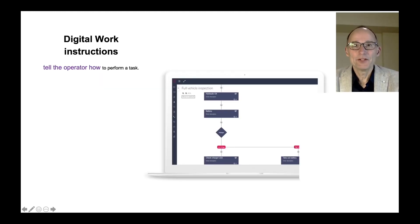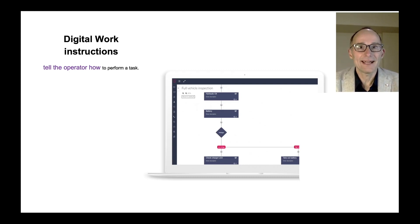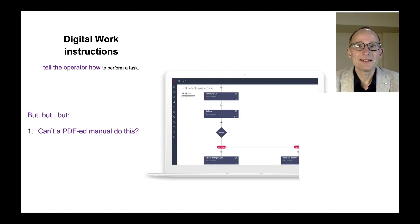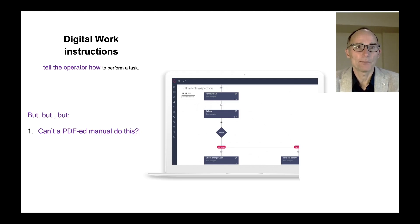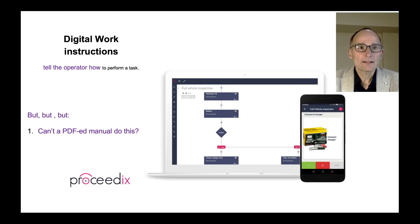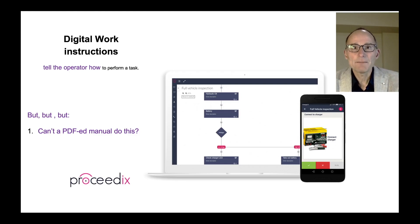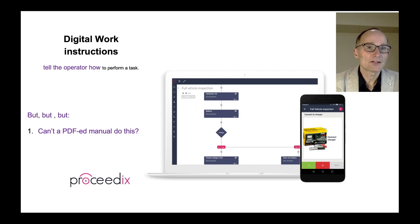The first step of digital operations is to digitize the work instructions which tell the operator how to perform a task. Note that this is different from a manual in PDF or a manual on a website that gives one-way information to the operator. The key difference is that digital operations should capture the reverse flow of operations from the operator. In a checklist, the operator logs information — a simple check, a value, an answer to a multiple choice, or even uploading a drawing or a picture.